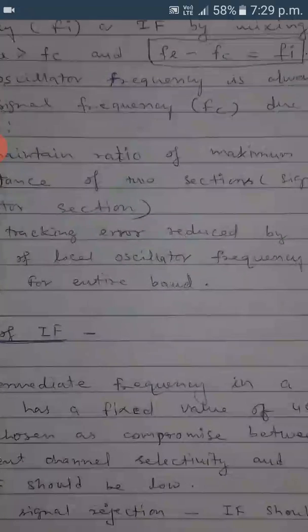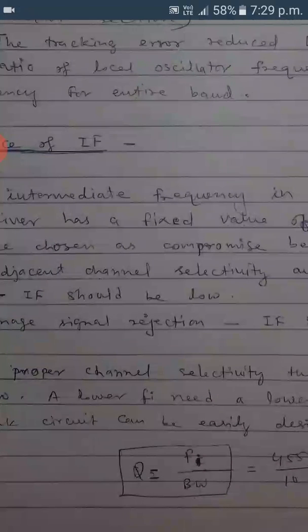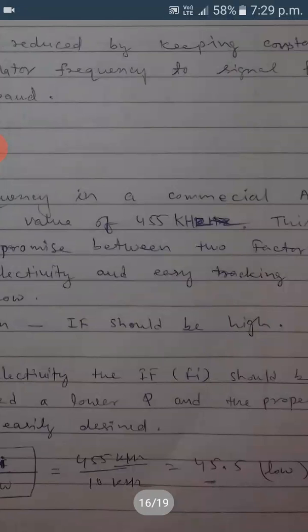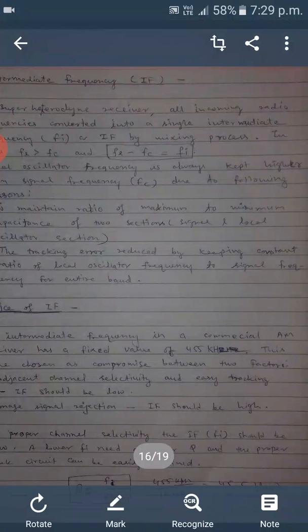So the IF value should not be too low or too high — it is a compromise. If the intermediate frequency is low, as seen in the equation Q = FI / bandwidth, with a bandwidth of about 10 kilohertz and FI = 455 kilohertz, Q is about 45.5, which is relatively low and makes it easy to design the tank circuits.